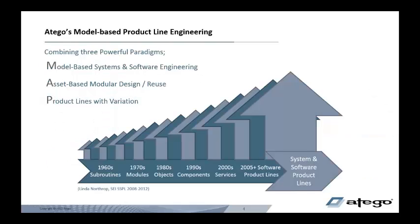Otago's model-based product line engineering solution combines three powerful paradigms: model-based systems and software engineering, asset-based modular design and reuse, and product lines with variation. Individually, none of these three are new. What is new is putting them all together.